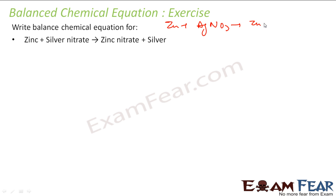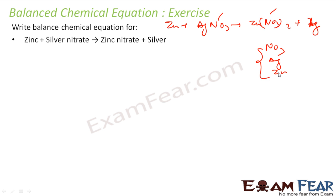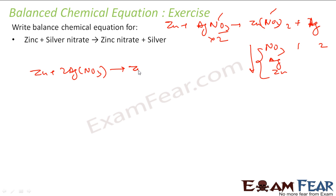Zinc plus silver nitrate gives zinc nitrate plus silver. If you see, there is an NO₃ part here — that is my first priority, then metals: zinc and silver. This guy has 1 nitrate and this guy has 2 nitrate, so we will multiply to get 2 AgNO₃. What you get is: Zn plus 2AgNO₃ gives Zn(NO₃)₂ plus silver. Now let us check: nitrate is 2 here and 2 here — done.